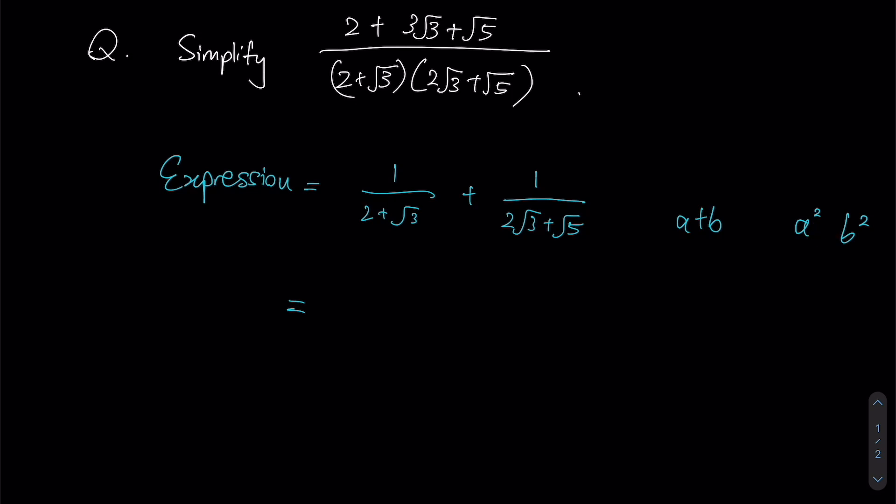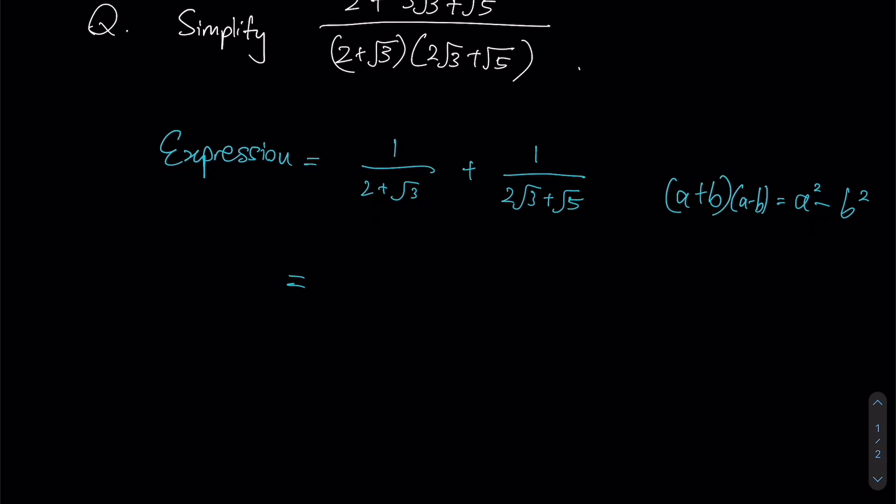And thankfully, we know this really common one over here, which would result in the difference of squares. Therefore, that tells us that if our denominators are of the form a plus b, I just need to introduce a minus b to the numerator, such that my denominator would then become a squared minus b squared. All right,